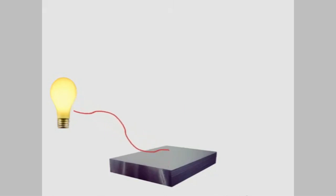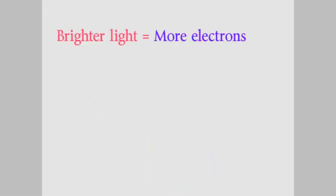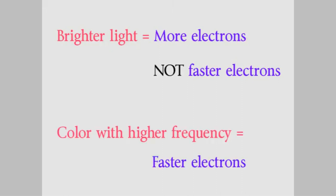So there were two surprising results. If you increase the intensity of the light, you don't get faster electrons, you just get more of them. And if you increase the frequency of the light, you get electrons that come off faster. These were both really surprising results.